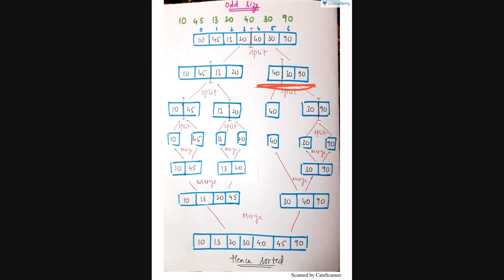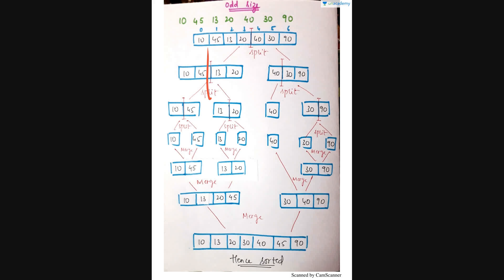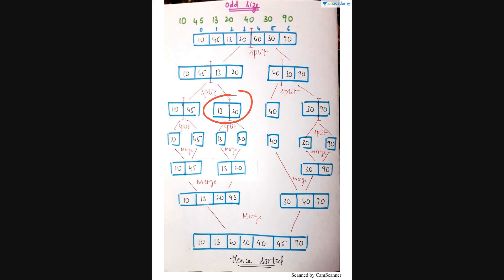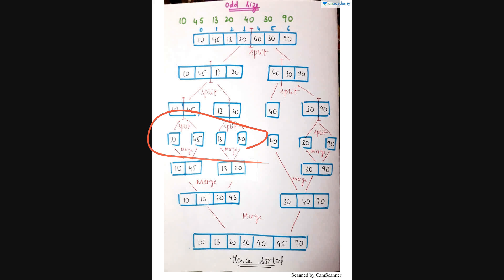We'll first handle the four-element part since it's even size. Dividing by two gives two elements each: 10 and 45 form one part, and 13 and 20 form another part. These are again even-sized (two by two = one), so each splits further into single elements: 10, 45, 13, and 20 are all separate.